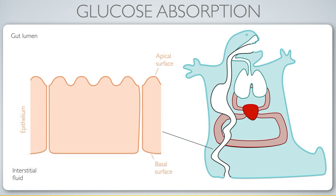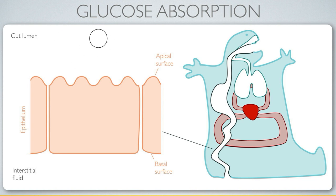The villi are finger-like projections that serve to enhance the surface area exposed to the gut lumen. At the top we have a meal that has been digested and is now ready to be absorbed, and that meal includes glucose molecules.